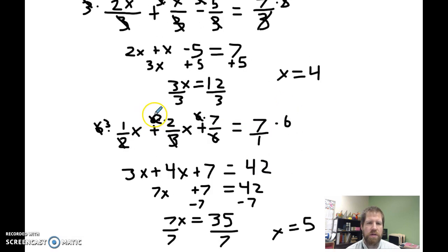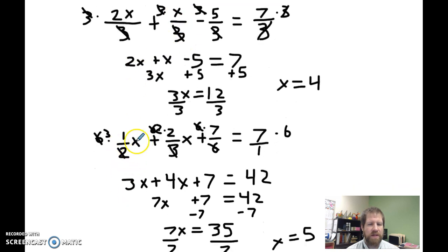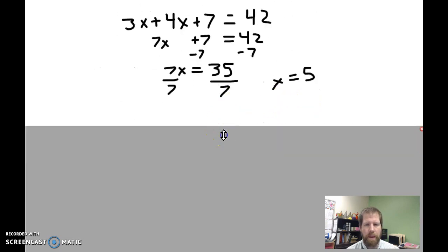One thing I did want to point out is, you can see in this first equation, I had my x variable in my numerator. I had 2x over 3, or x over 3, and in this one, I had it off to the side. I had 1 half times x. These are the same. They're two different ways of writing the same thing. So 1 half x is equal to x over 2. So don't get confused by that.